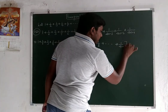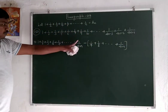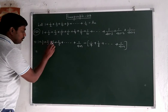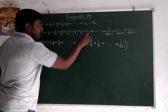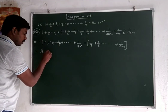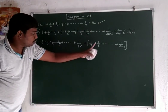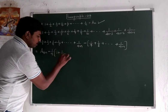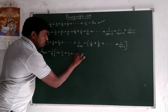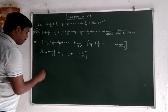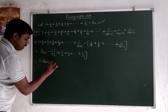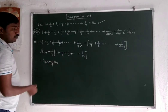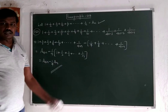So 1 over 4n. So: 1 plus 1 by 2 plus 1 by 3 plus 1 by 4 plus 1 by 5, up to 1 by 4n — that is a₄ₙ — minus 1 by 4 into 1 plus 1 by 2 plus 1 by 3, up to 1 by n. So a₄ₙ minus 1 by 4 into aₙ. This is the final answer.